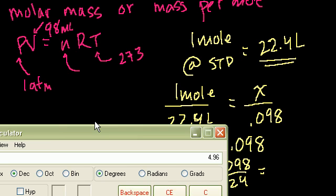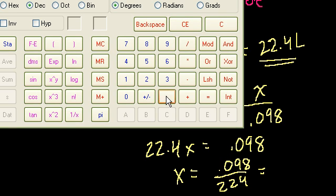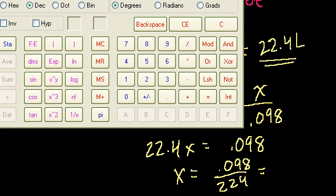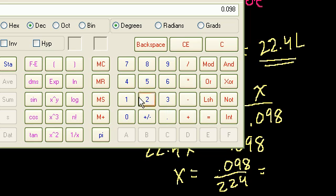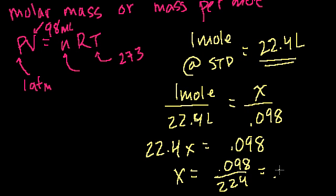And this of course is in moles, right? So 0.098 divided by 22.4 is equal to 0.004375, 0.004375 moles.